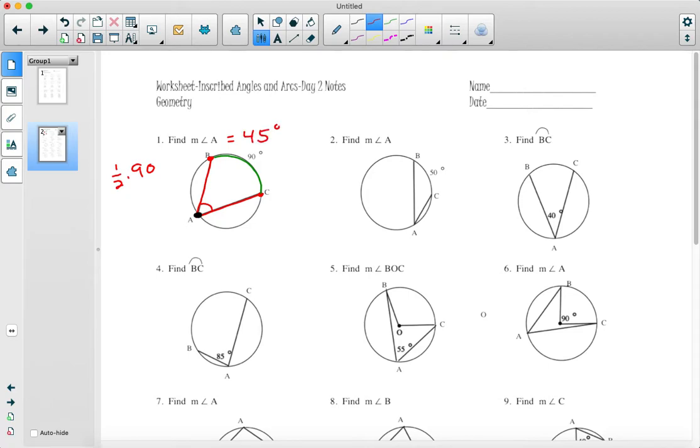Number two is the same idea. Number three is backwards. Instead of giving you the arc, they're giving you the angle. If we have the arc, we cut it in half to get the angle. So what do we do if we have the angle and we want the arc? We double the angle. If the inscribed angle is 40 degrees, we multiply that by 2 to get the arc, so the arc is going to be 80 degrees.